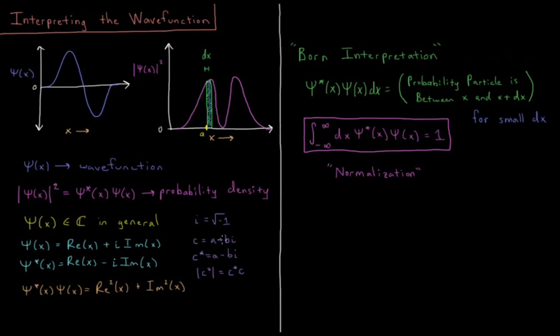So C equals A plus B I, C star equals A minus B I. So the only difference here is any place where we find an I in the wave function, we change that to a minus I. So this is equal to psi star times psi, gives us the real part squared plus the imaginary part squared,